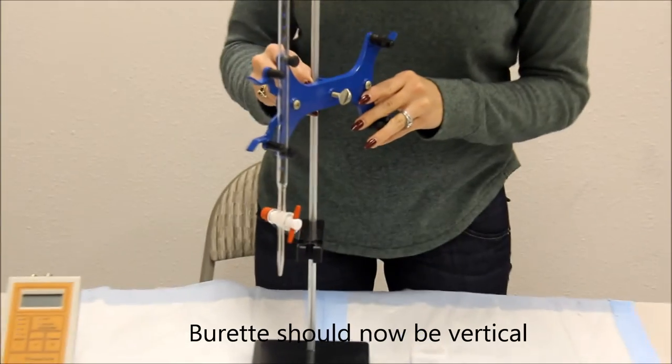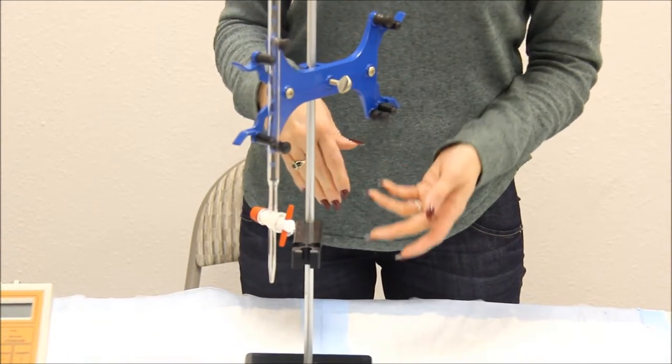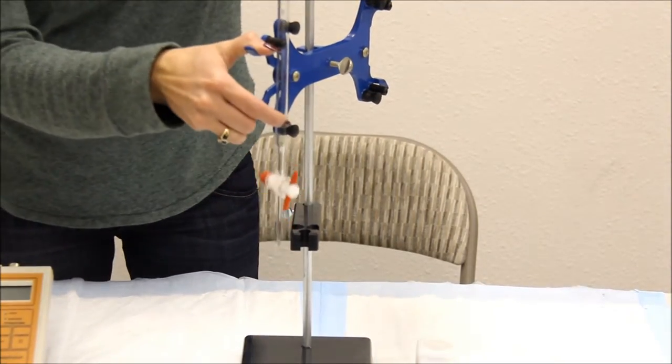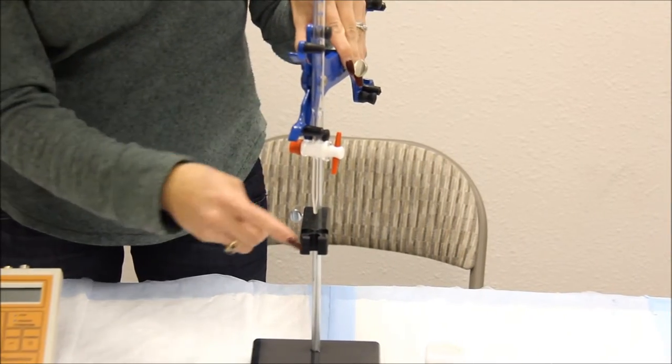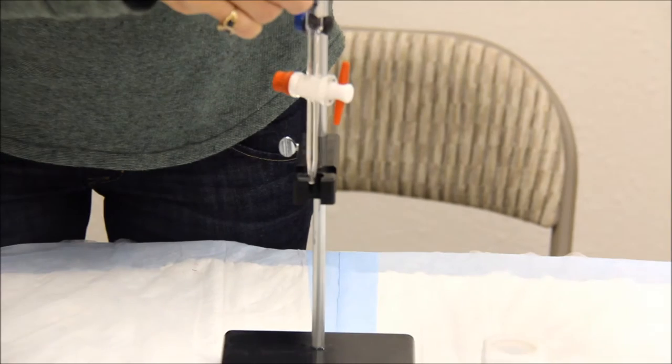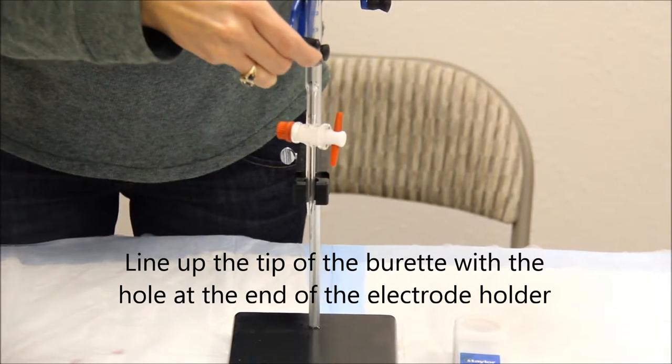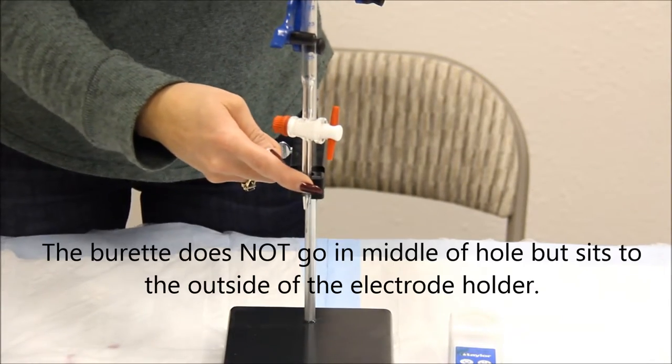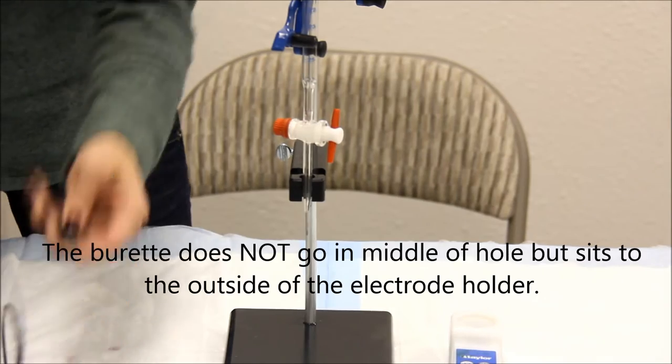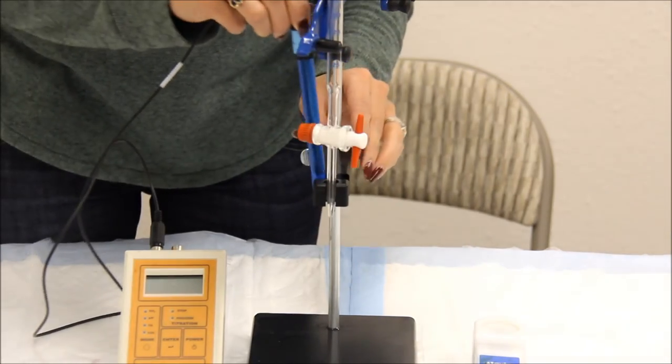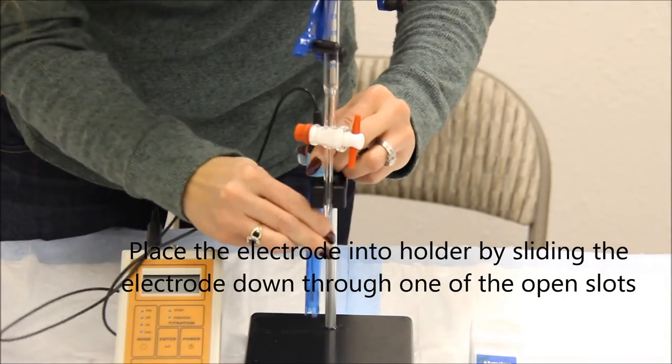You can now add your SO2 or pH electrode. Use the front hole of your electrode holder as a guide for where your burette will go. The burette does not fit into the hole but sits outside the electrode holder and just acts as a guide. You can place your electrode by sliding it down into one of the holders.